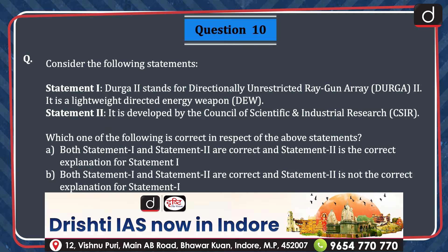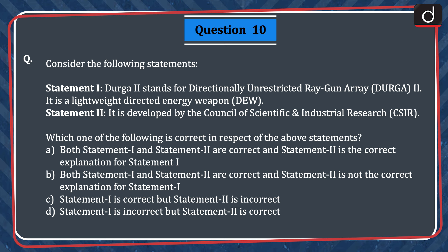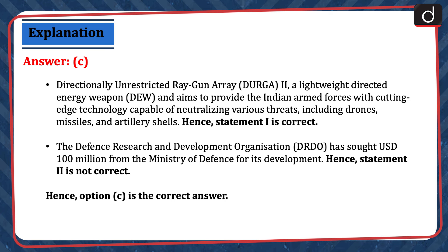Last question: Statement 1 — Durga 2 stands for Directionally Unrestricted Ray Gun Array 2; it is a lightweight directed energy weapon. Statement 2 — It is developed by the Council of Scientific and Industrial Research. Which is correct? Options: (A) Both correct and statement 2 explains statement 1; (B) Both correct but statement 2 does not explain statement 1; (C) Statement 1 correct but statement 2 incorrect; or (D) Statement 1 incorrect but statement 2 correct. The correct answer is option C. Durga 2 is a lightweight directed energy weapon aimed at providing the Indian armed forces with technology to neutralize threats including drones, missiles, and artillery shells — hence statement 1 is correct. DRDO has sought 100 million US dollars from the Ministry of Defence for its development — hence statement 2 is not correct. Therefore, option C is the correct answer.